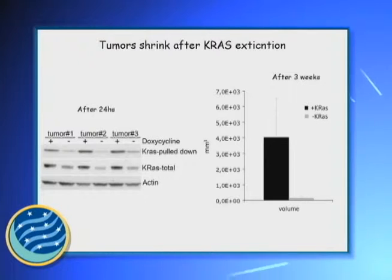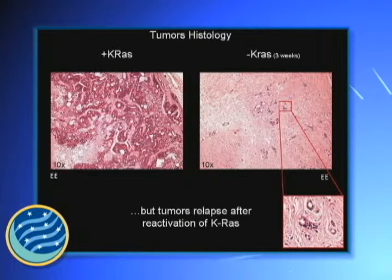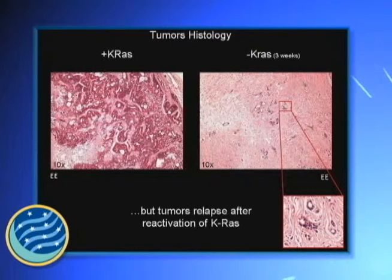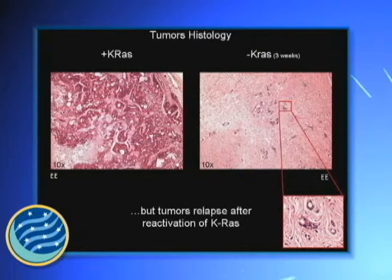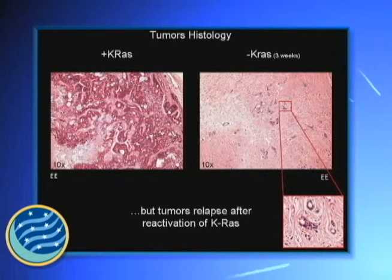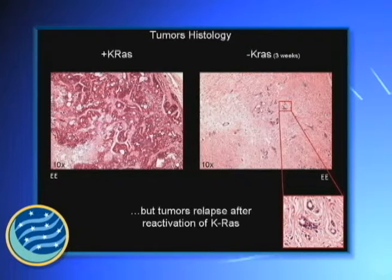But if we reactivate KRAS in this tumor even months after the regression, the tumor relapses. So it means that inside this regressive tumor, there are still active tumorigenic cells.